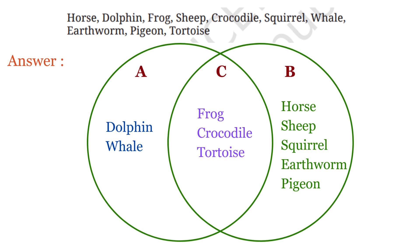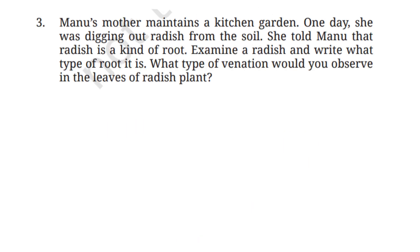Animals that live only in water are dolphin and whale. Animals that live only on land are horse, sheep, squirrel, earthworm, and pigeon. Animals that can live both on land and in water are frog, crocodile, and tortoise.